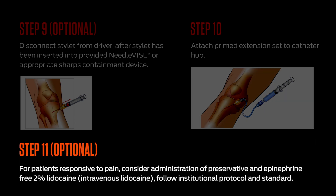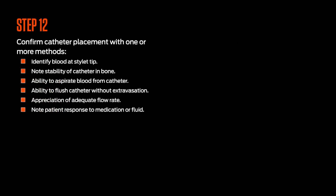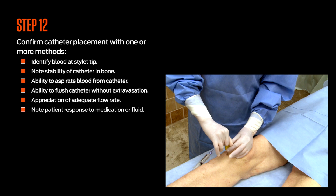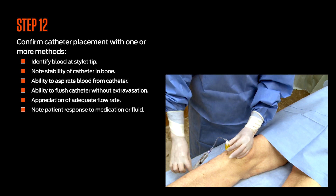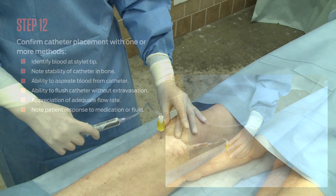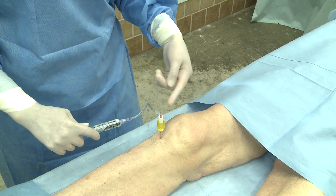Step 11 (optional): For patients responsive to pain, consider the administration of preservative- and epinephrine-free 2% lidocaine. Step 12: Confirmation and reconfirmation of catheter placement should include one or more recommended methods: identify blood at the stylet tip; note stability of catheter in the bone; note ability to aspirate blood from the catheter; note ability to flush catheter without extravasation; appreciation of adequate flow rate; and noted patient response to medications or fluids.